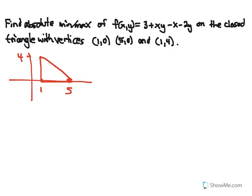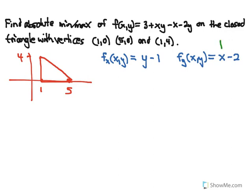The first thing I'm going to do is find those partial derivatives. So f_x, the partial derivative in terms of x of f(x, y), is found by deriving the function while treating y terms as constants — that gives us y minus 1. And f_y, treating the x's as constants, gives us x minus 2.